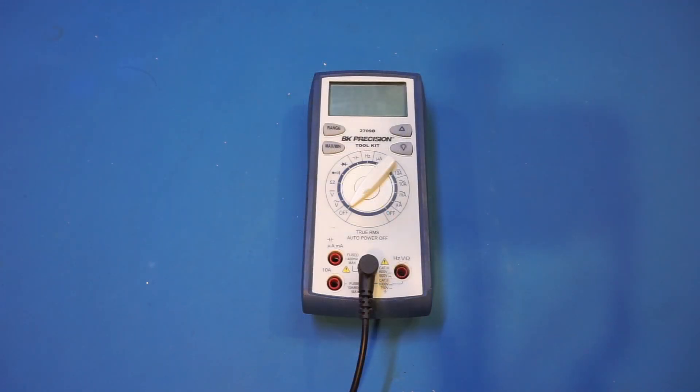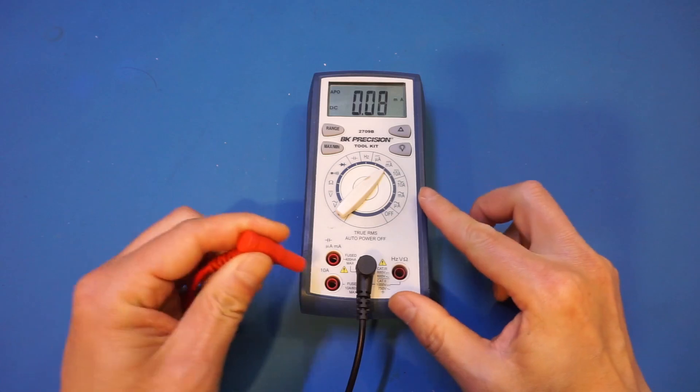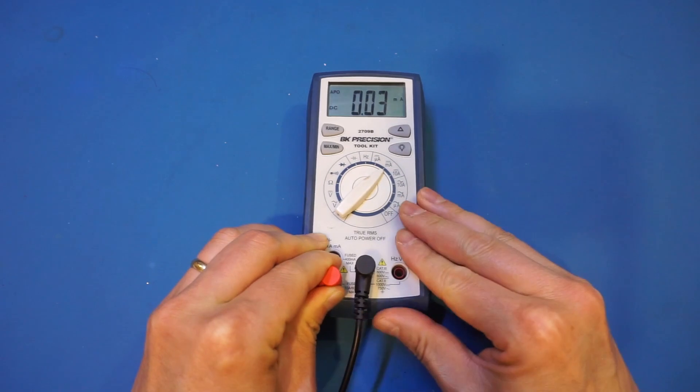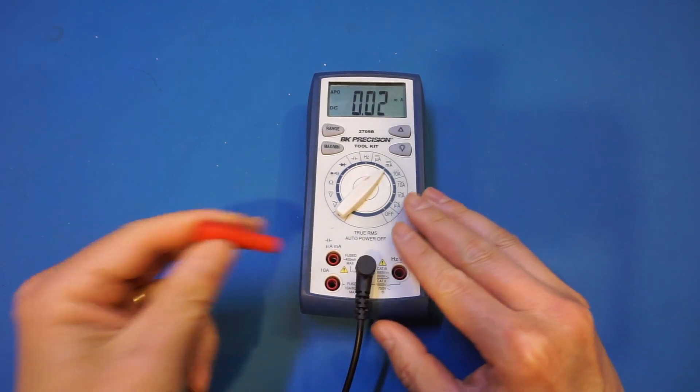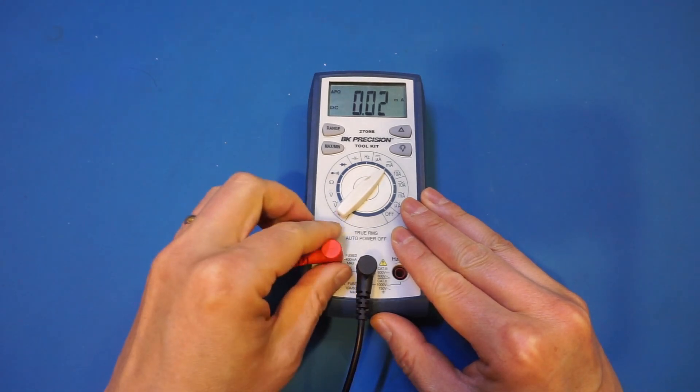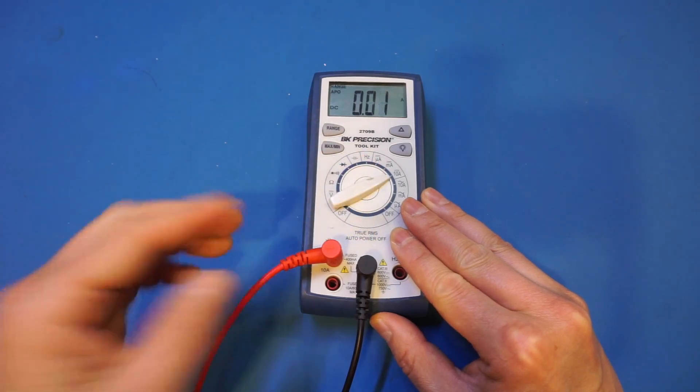My BK2709B has a split input jack design. While it doesn't prevent you from physically inserting the probe into the wrong jack for the intended range, you do get a very loud audible warning if the probe is in the wrong jack. So let me demonstrate here. Let me put it into milliamp range, and let's plug it into the amp jack. You'll hear this very loud warning telling you that you're in the wrong jack here. So let me, of course, put it into the milliamp jack and everything is working great. And vice versa, if I now change it to 10 amp range, you'll hear this warning again because we're in the wrong jack.